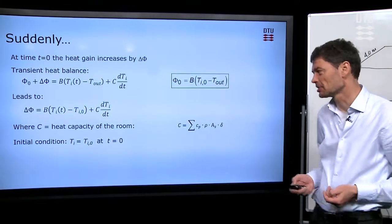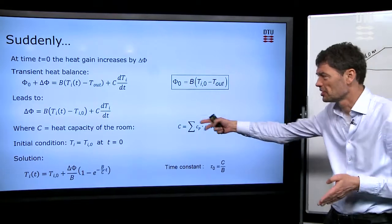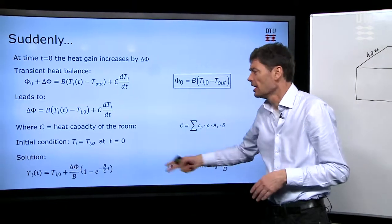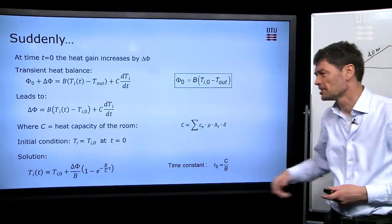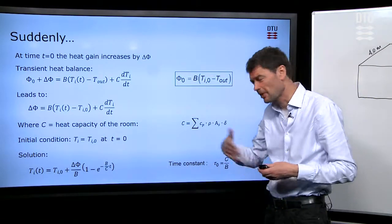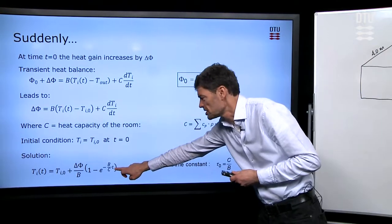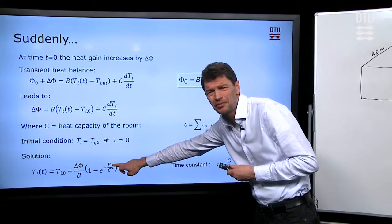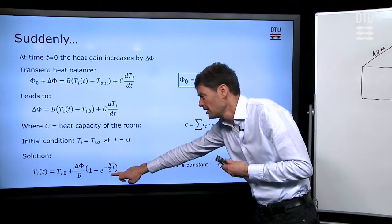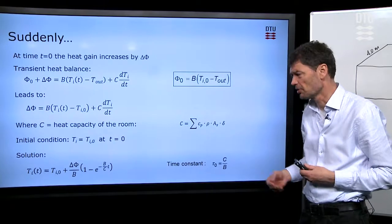Now, with the initial condition, as we talked about at time zero, we have the partial differential equation we can solve, and here comes the solution. It's an exponential decline towards a final solution for the time. Here is where we insert the time. As a coefficient in front of the time, you have the coupling coefficient and you have the heat capacity. That's our coefficient in this equation.